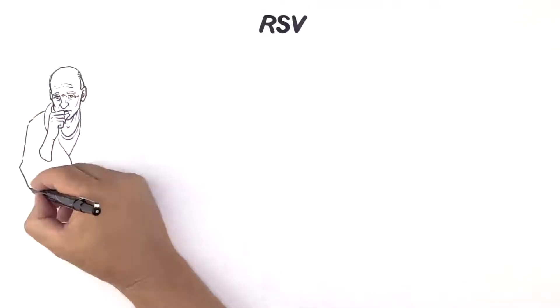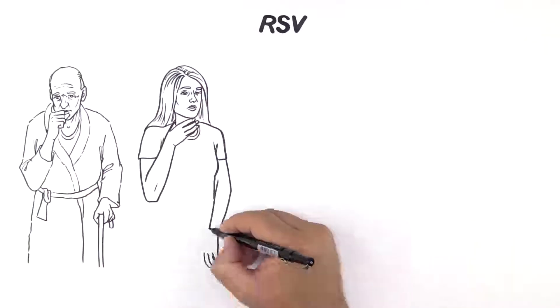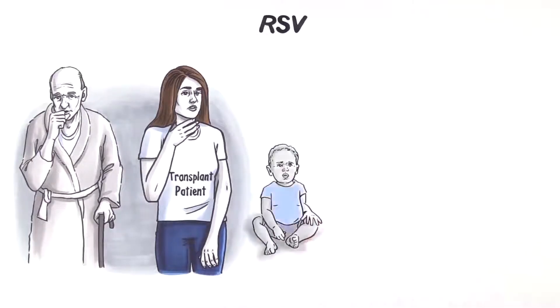RSV is the cause of substantial morbidity and mortality in various patient populations, including immunocompromised patients, such as transplant patients, and especially in children less than two years of age.